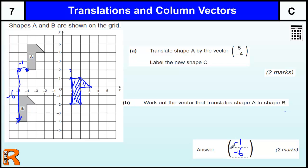down minus six, making sure we put the horizontal component on top and the vertical component underneath. A nice straightforward four marks for translations.